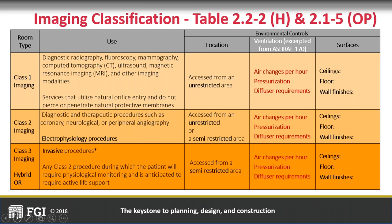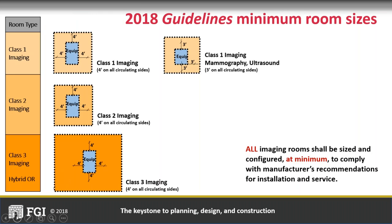Class three imaging could include anything we might wheel into the OR — portable CRs, portable ultrasound machines. If we are using imaging to inform a surgical procedure, that is, in effect, class three imaging. I suspect that if we were doing this webinar 10 years from now, we would be looking back thinking: why would anybody do any surgical procedure that wasn't informed by imaging? I think that's the direction we're going — probably not too long before most surgical procedures are class three imaging procedures because they would be imaging-informed.